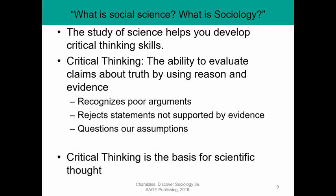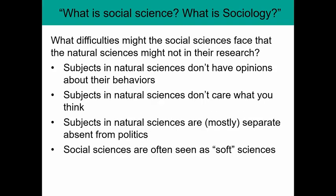Questioning assumptions is a big part of social science. Up to this point in your life, you've probably made a lot of assumptions about the social world because you're a human being, and some of those assumptions are wrong. What social science does is help you question those assumptions and figure out what actual reality is in the social world — not just how you think the world works. Critical thinking is the basis for scientific thought, and it allows us to get to the actual truth of the matter. But there are difficulties that social scientists face that natural scientists don't face.